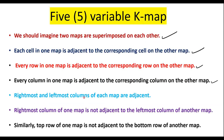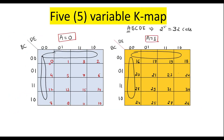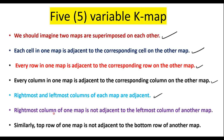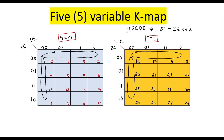The rightmost and leftmost columns of each map are adjacent to each other within the same map. That is, cells 0, 4, 12, 8 and 2, 6, 14, 10 are adjacent within the a=0 map, and similarly for the a=1 map. However, the rightmost column of one map is NOT adjacent to the leftmost column of the other map — meaning column 2, 6, 14, 10 is not adjacent to 16, 20, 28, 24; and column 18, 22, 30, 26 is not adjacent to 0, 4, 12, 8.